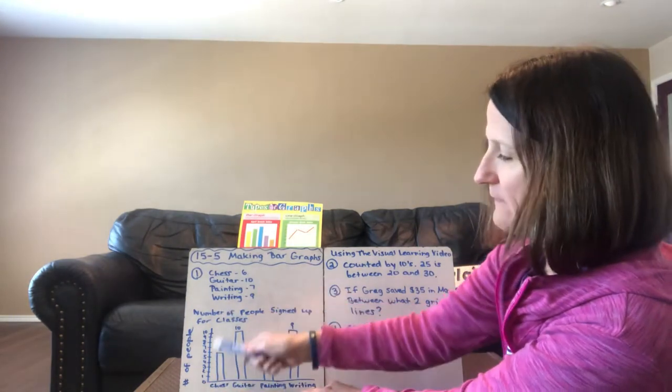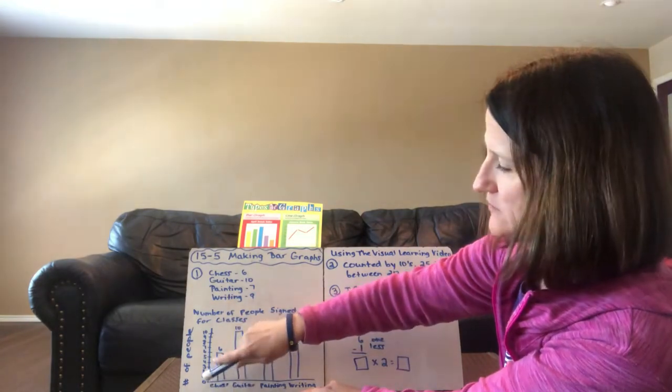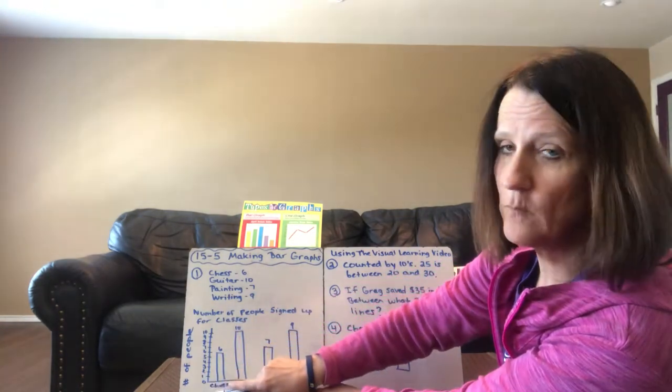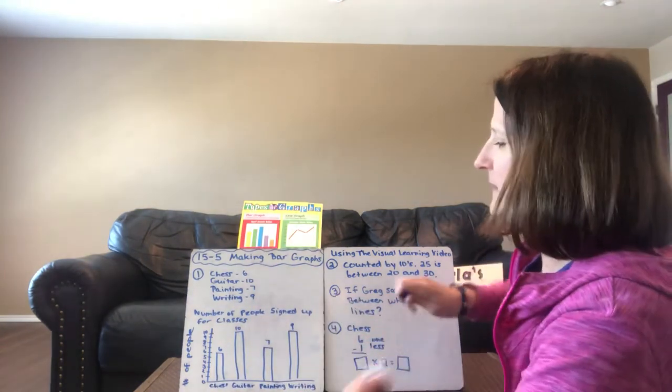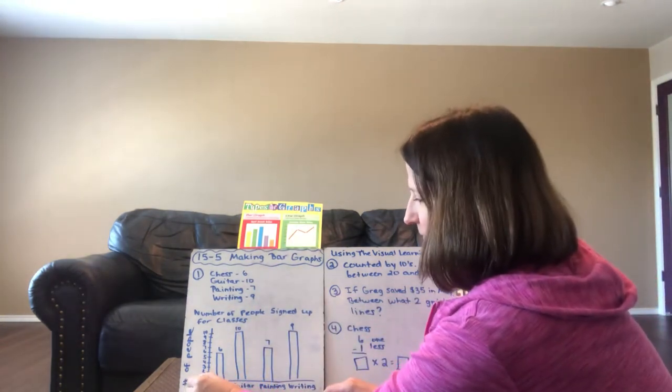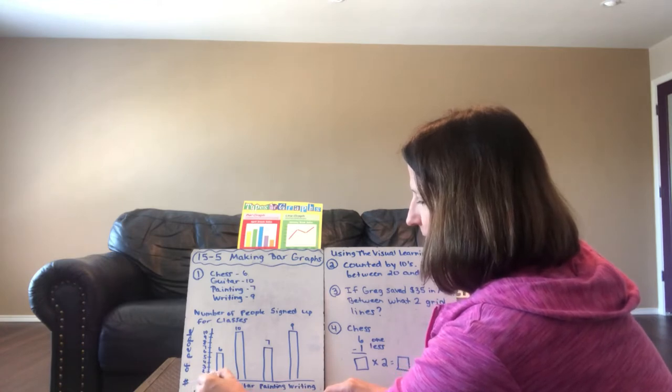Now what you have on your paper is the outline of the bar graph. You've got your scale over here showing the number of people. They counted by one, so they numbered zero through ten. And then down here are the classes they signed up for.